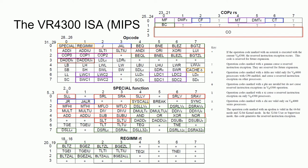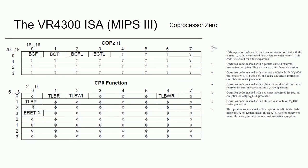That may seem like a lot of instructions, but that's only the integer part of the instruction set. Luckily, coprocessor 0 has a simpler set of instructions. We have four conditional branch instructions which apply to all coprocessors, not just coprocessor 0. There are four TLB, or translation lookaside buffer, instructions used for setting up the TLB for virtual memory address translations, and a single jump instruction which is how the processor exits from an exception handling routine. The rest are unimplemented.